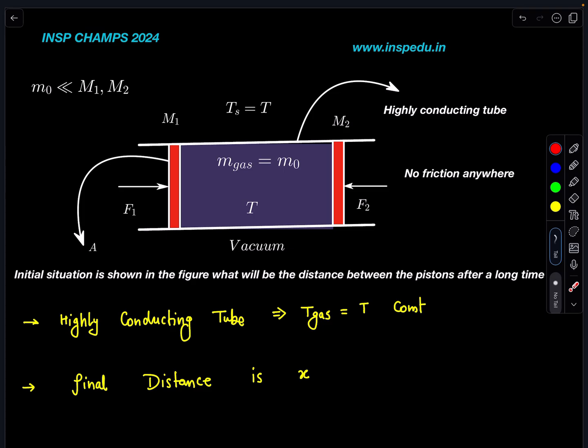Some amount of gas is present inside this piston—basically it's a tube in which two pistons are connected with masses M1 and M2. This tube is a highly conducting tube. What is the meaning of these terms? Highly conducting tube means that whatever temperature of surrounding is there, that temperature will be of the gas also, because heat will very quickly transfer from gas to surrounding or surrounding to the gas.